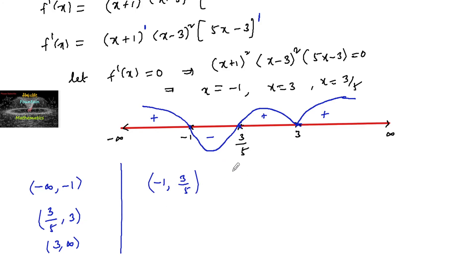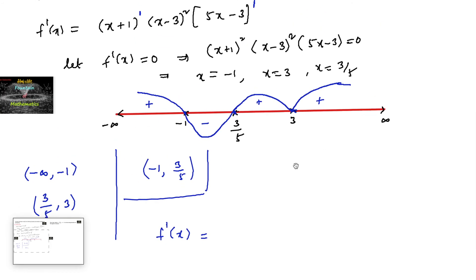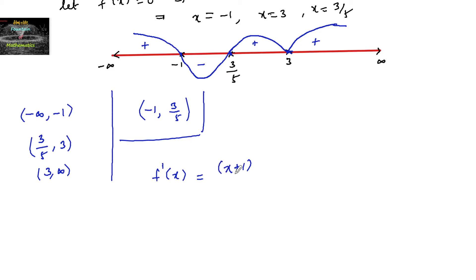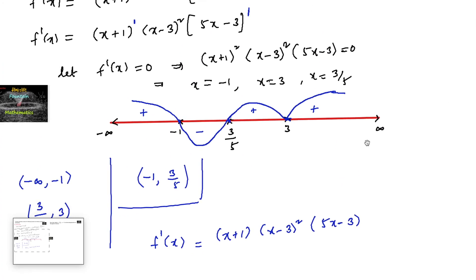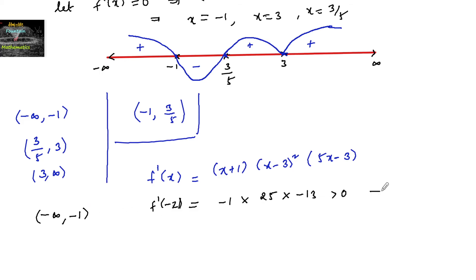We can also confirm this by taking test points in each interval. f'(x) = (x+1) · (x−3)² · (5x−3). In the interval (−∞, −1), take x = −2: f'(−2) = (−1) · (25) · (−13) = positive. So f'(x) > 0 and the function is increasing there.